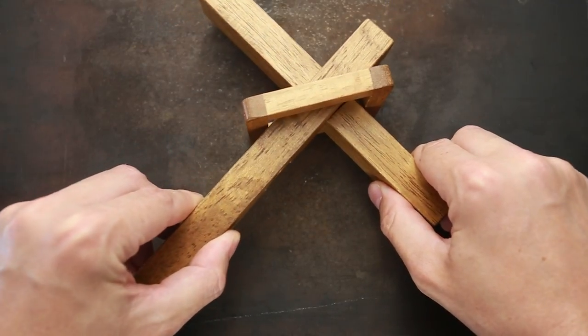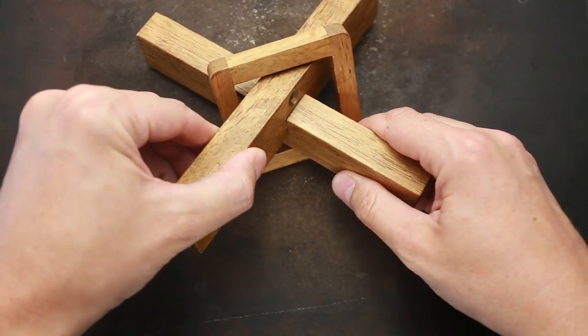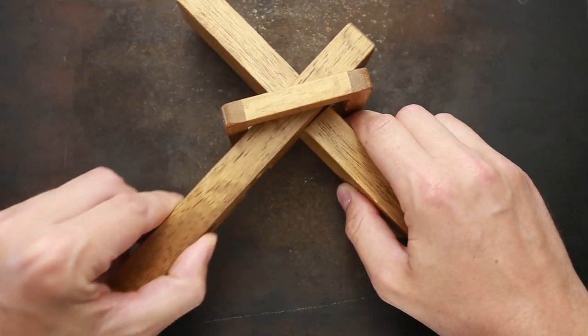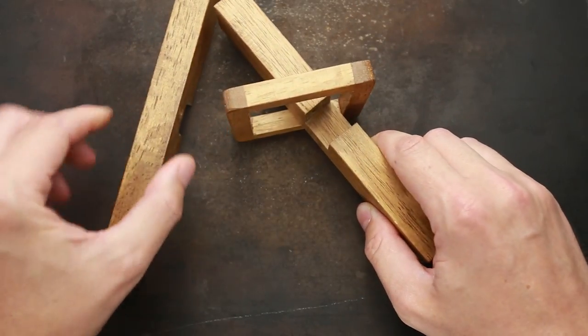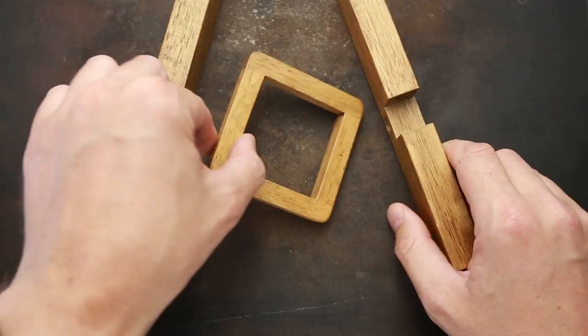Now you can just slide one part of the cross out and that's the other one.